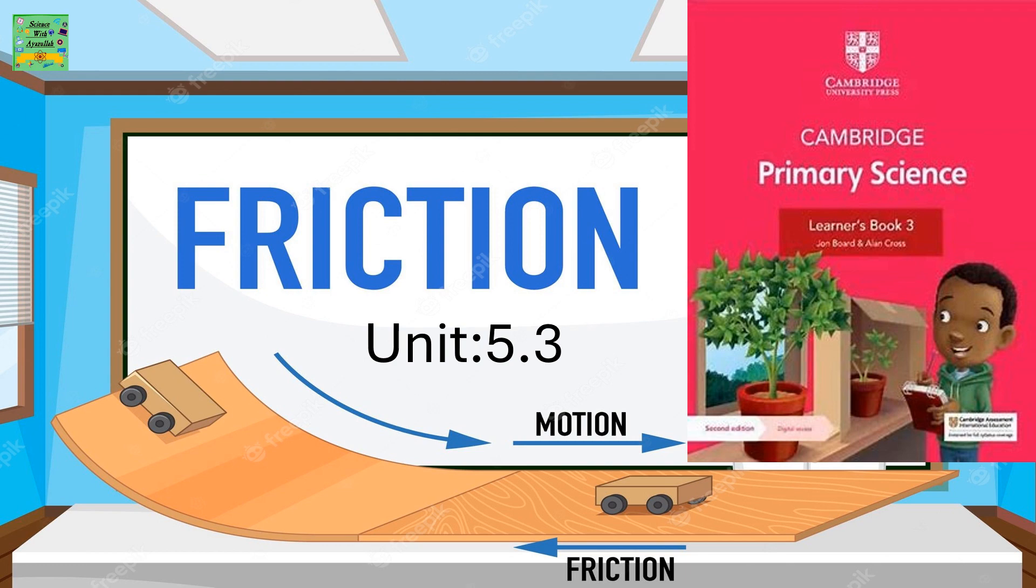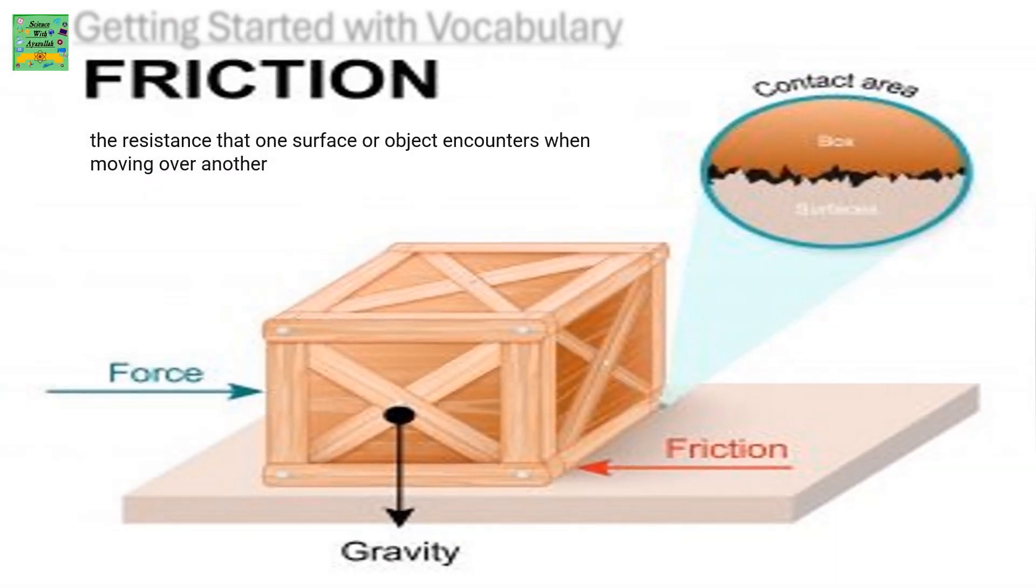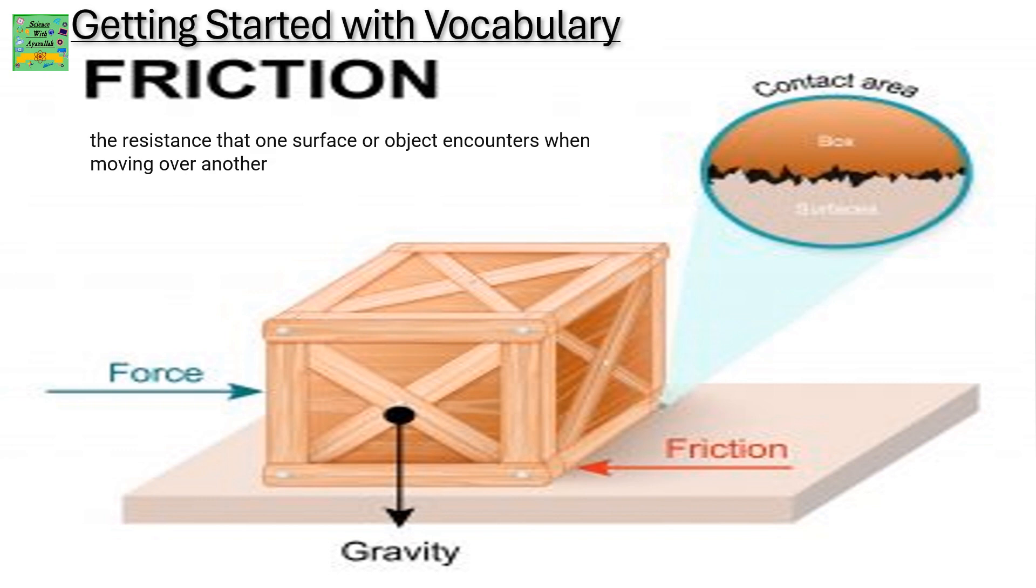Unit 5.3 Vocabulary. Friction: The resistance that one surface or object encounters when moving over another.